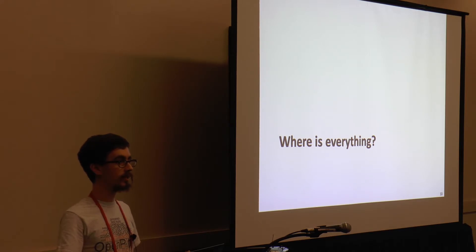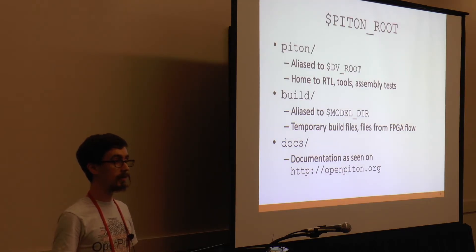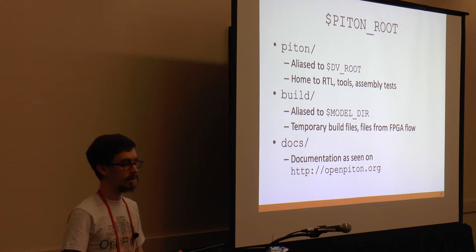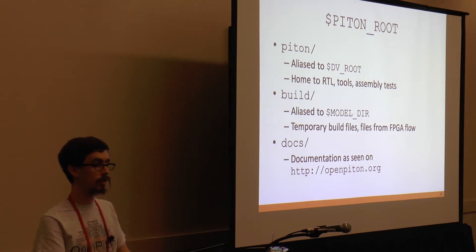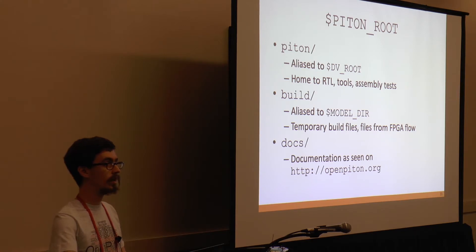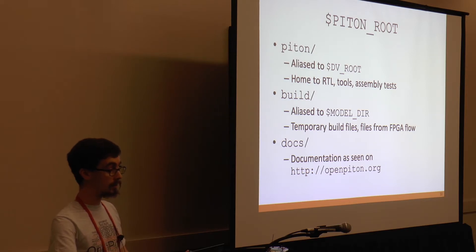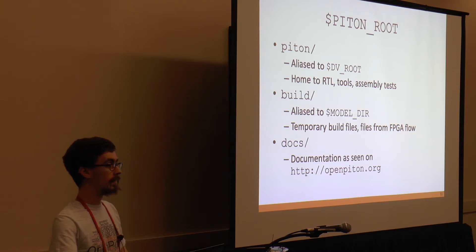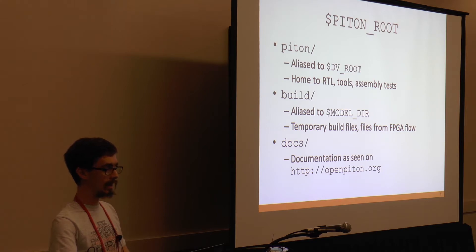The next thing is to tell you where things actually live in the download. In the Piton root directory, there are three subdirectories. One is called 'piton' and is aliased to the DV_ROOT environment variable — it has all of the RTL, tools, and assembly tests in subdirectories. There is a 'build' subdirectory primarily for temporary build files; if you're on the FPGA flow or running simulations, things will be built there. We recommend running our scripts from inside the build directory so that you don't create files in your local directories.